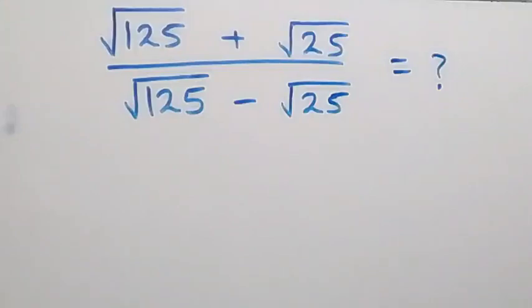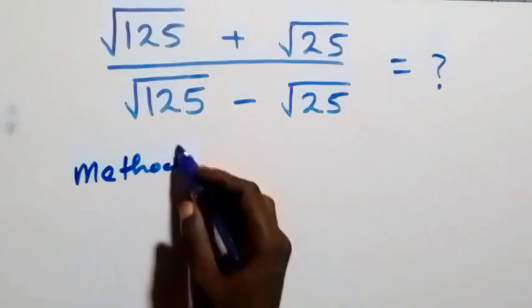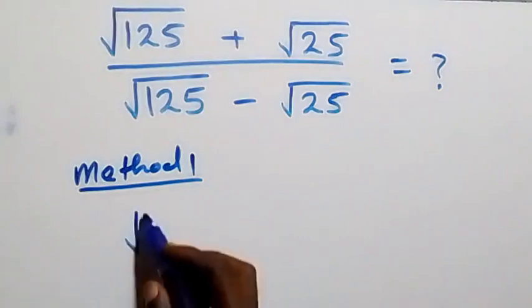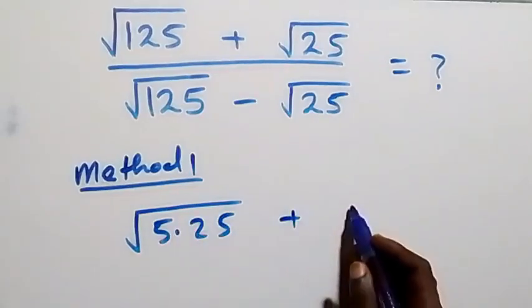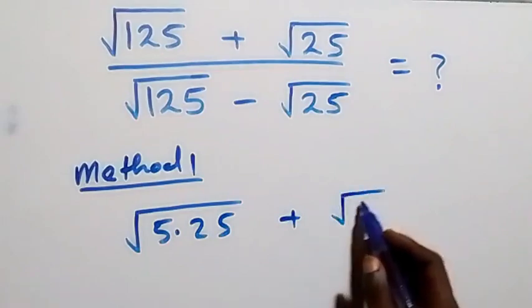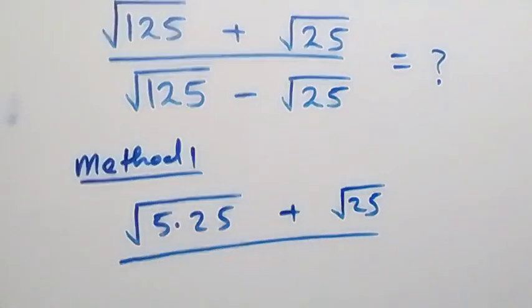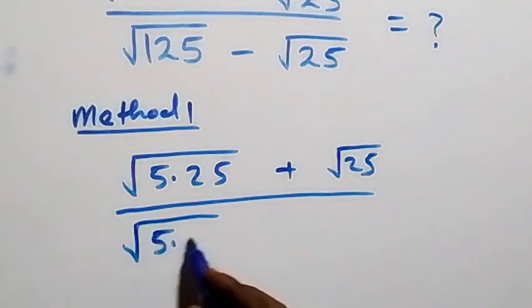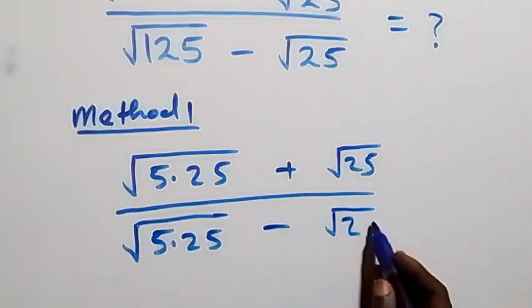Hello, welcome. How to solve this nice squared problem — let's use two methods. Method one: let's write root 125 as root of 5 times 25, then plus root 25, then divided by root 125 written as root of 5 times 25, then minus root 25.